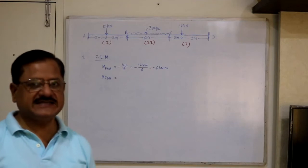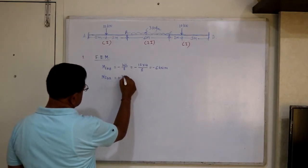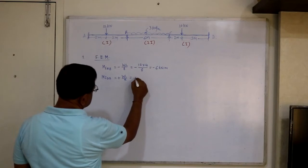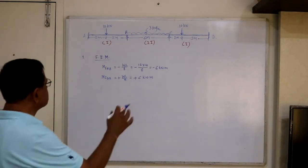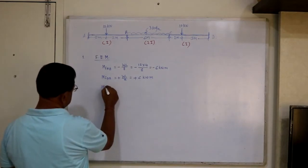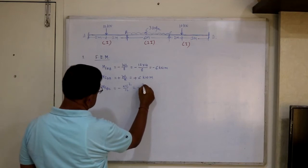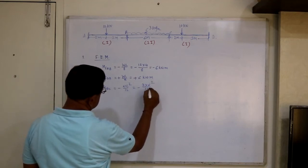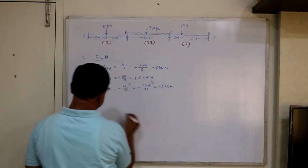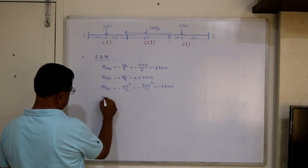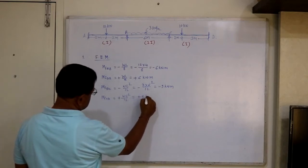For the same member, the fixed end moment at end B — mf_BA — is the reverse: plus 6 kN·m, since the loading is symmetrical. For the second span BC, mf_BC equals minus WL²/12 (UDL loading): with W = 3 and L = 6, this gives minus 9 kN·m. Then mf_CB equals plus WL²/12, giving plus 9 kN·m.